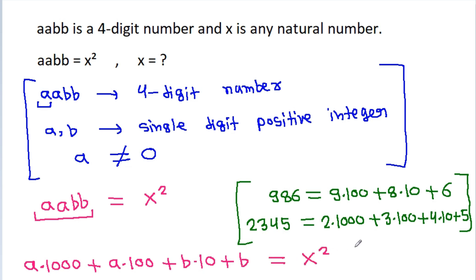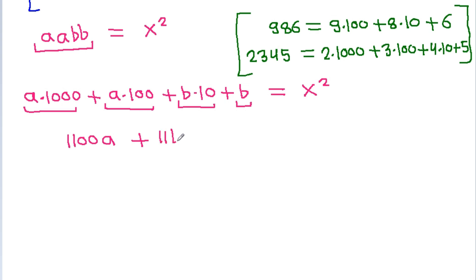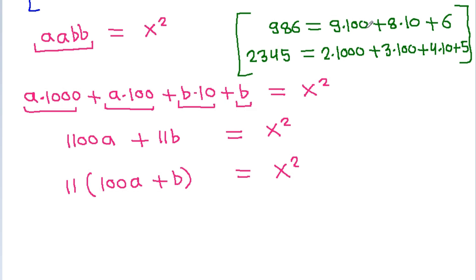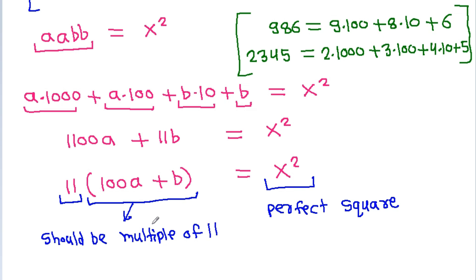So AABB equals A×1000 + A×100 + B×10 + B, which equals 11×(100A + B), and this is equal to X squared. Since X squared is a perfect square and we have the factor 11, we need 11×(100A + B) to be a perfect square, so (100A + B) must also be divisible by 11.